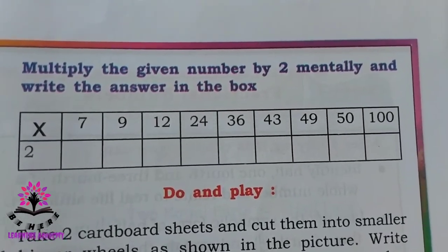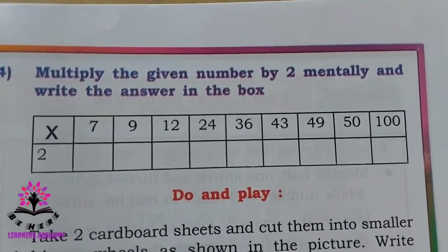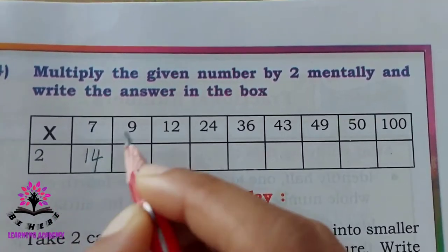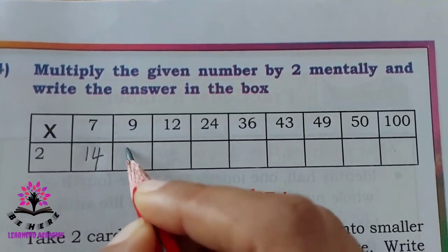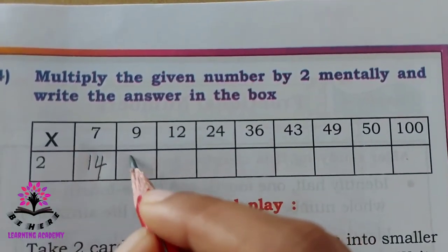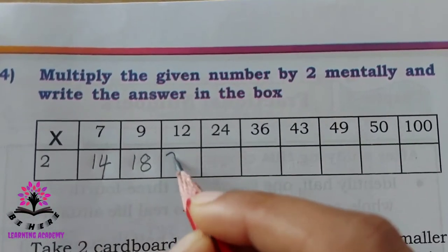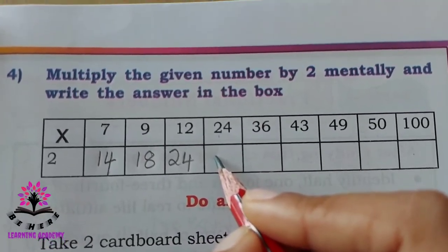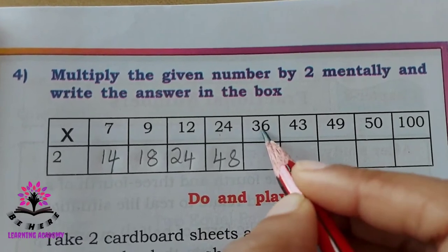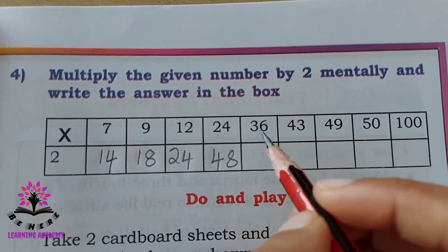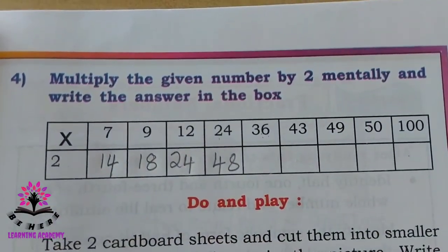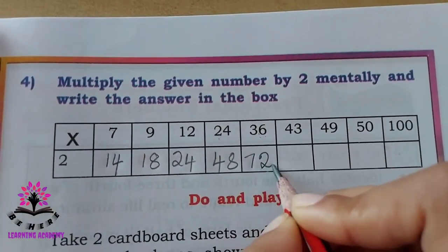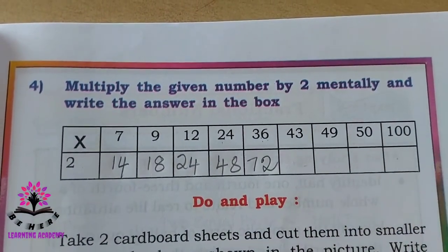Multiply the given number by 2 mentally and write the answer in the box. 7, 7 into 2, 7 twos are 14. 9 twos are, you must know the tables for this, 9 twos are 18. 12 twos are 24. 24 twos are, 24 twos are 48. Then next one, 36 into 2, how much? It is 72. Remaining, do it by yourself.